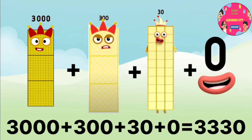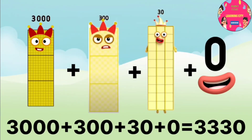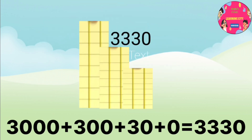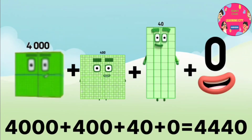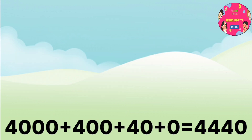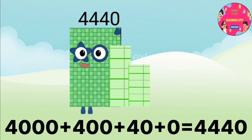3000 plus 300 plus 30 plus 0 equals 3330. 4000 plus 400 plus 40 plus 0 equals 4440.